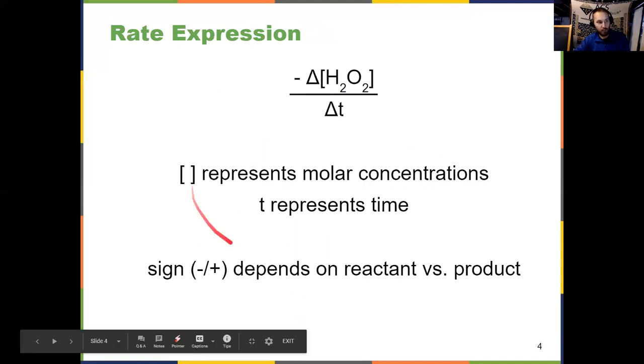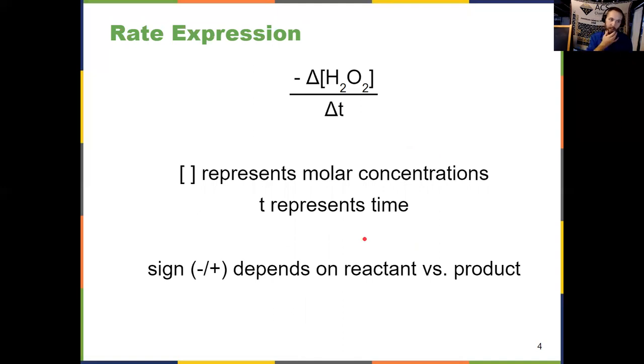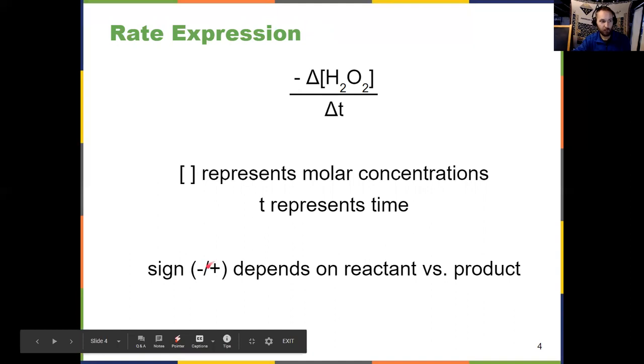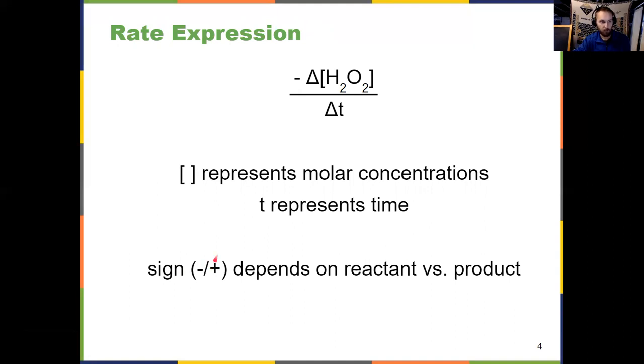Pretty much everything I said previously is shown on this slide. Brackets represent molar concentrations, T represents time. And depending on what units we have, you can express that a couple of different ways. And the sign depends on a reactant or product. Negative if it's a reactant, positive if it's a product. Think P for positive, P for product.